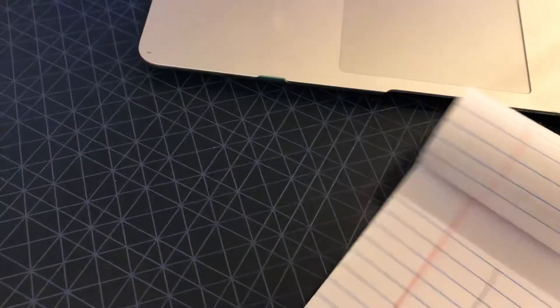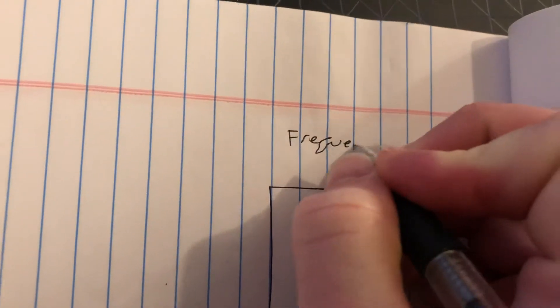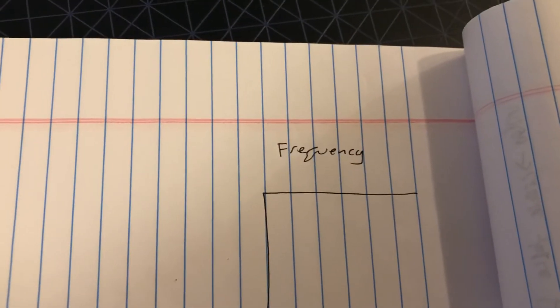So if we go to our paper, we're going to draw a graph, and on the y-axis is always going to be the frequency, which is just literally counting how many times is something happening.